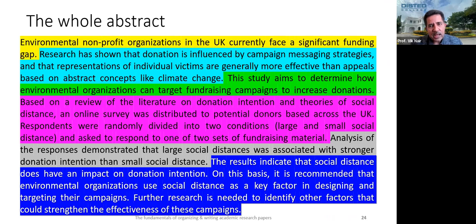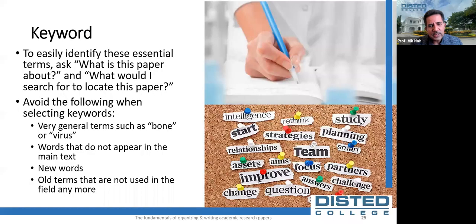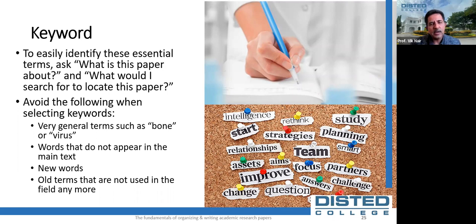In most abstracts you also need to include suitable keywords. If your paper will be published, you may need to add a list of keywords at the end of the abstract. These keywords should reference the most important elements of the research to help potential readers find your paper in literature searches. Be aware that some publication manuals such as APA style have specific formatting requirements for keywords. The instructions for authors will normally state how many keywords are required.